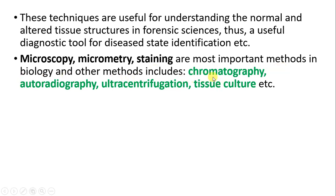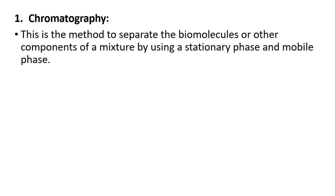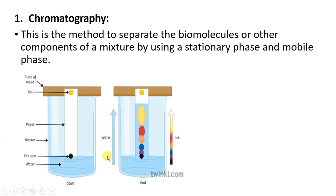More methods present in cell biology include chromatography, auto-radiography, ultra-centrifugation, and tissue culture. In chromatography, if you see this diagram, there is a Whatman filter paper. We place a spot on it — for example, a drop of plant extract — and this paper acts as the stationary phase.